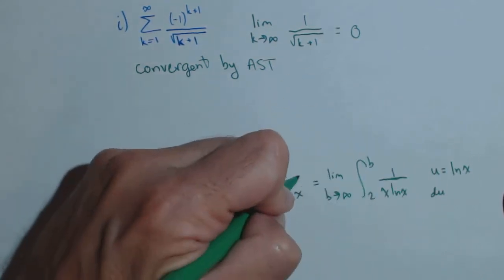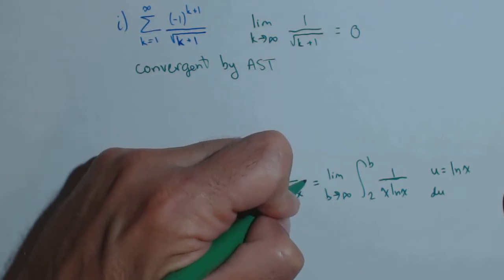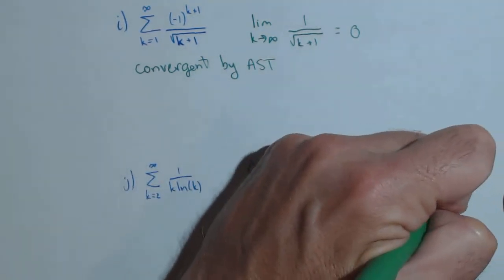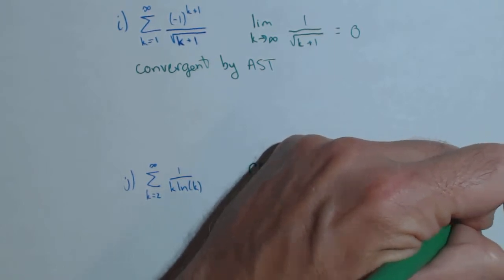Then du, I should have a couple dx's in here, dx dx, equals 1 over x dx.